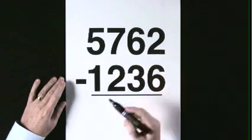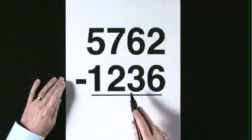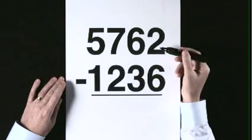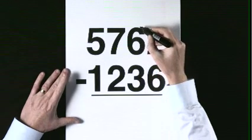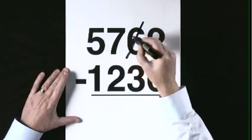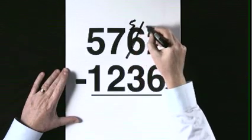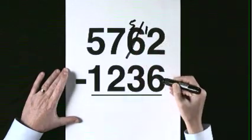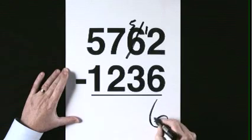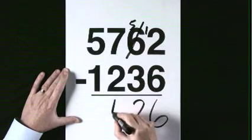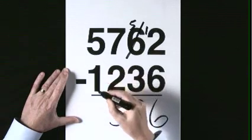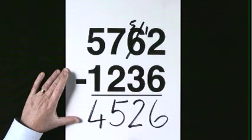5,762 subtract 1,236. To subtract 6 is not possible, we need to exchange from the tens. 6 becomes 5, 12. 12 takes 6 is 6. 5 takes 3 is 2. 7 takes 2 is 5. 5 takes 1 is 4. The answer is 4,526.